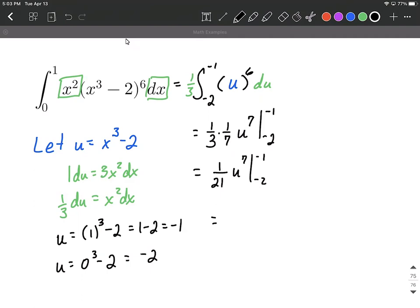We need to finish by actually plugging in those bounds. So we have one twenty-first multiplied by negative one to the seventh power. And from that we subtract one twenty-first multiplied by negative two to the seventh power.